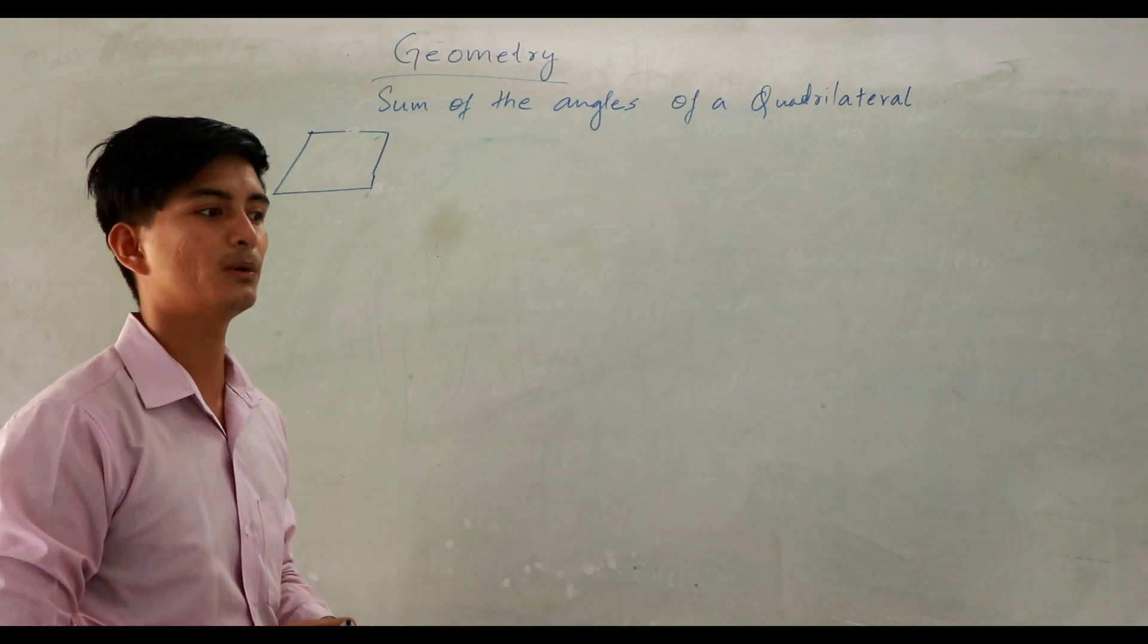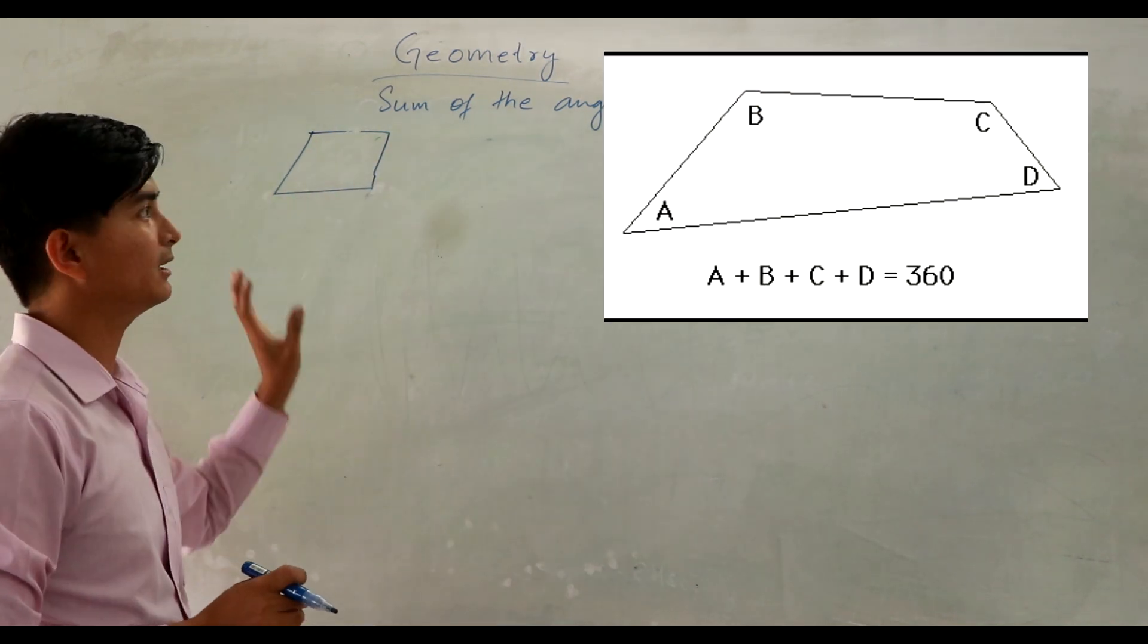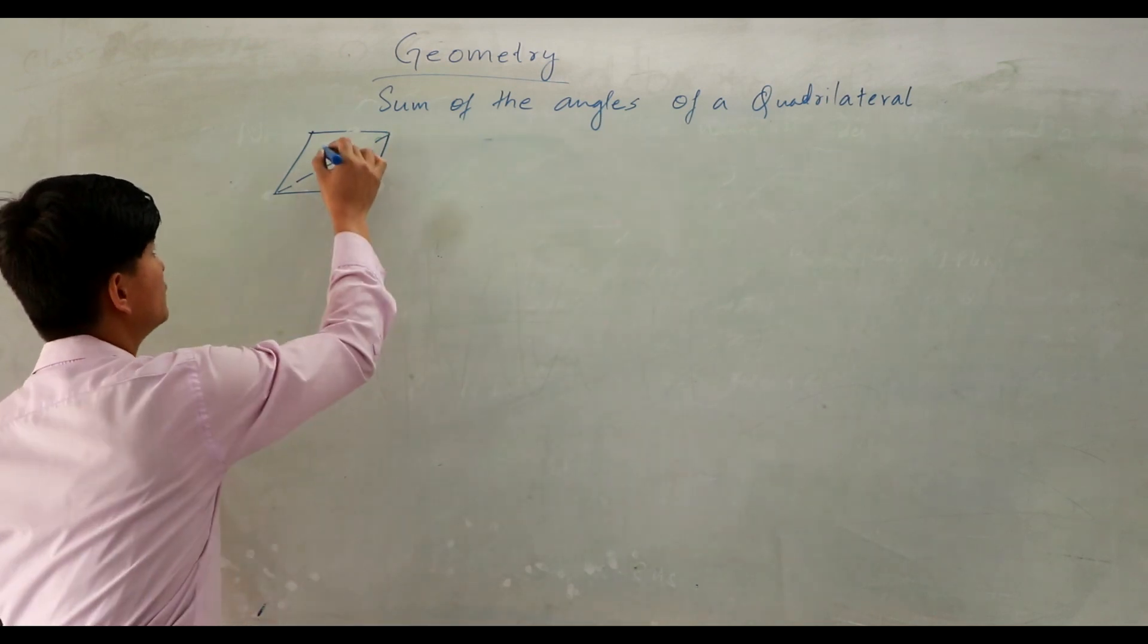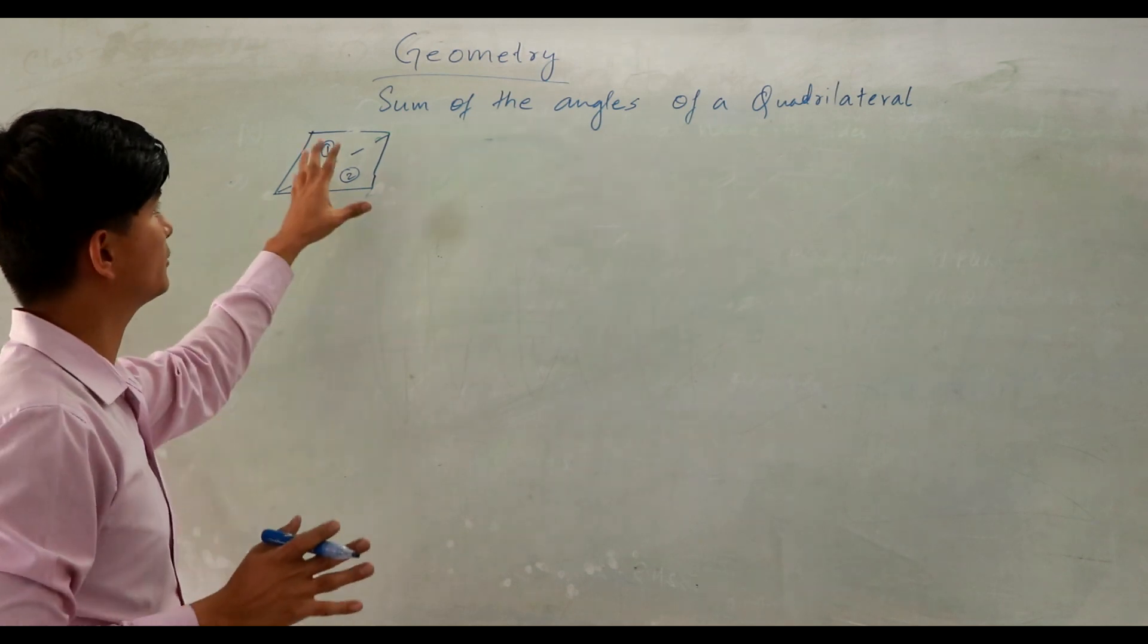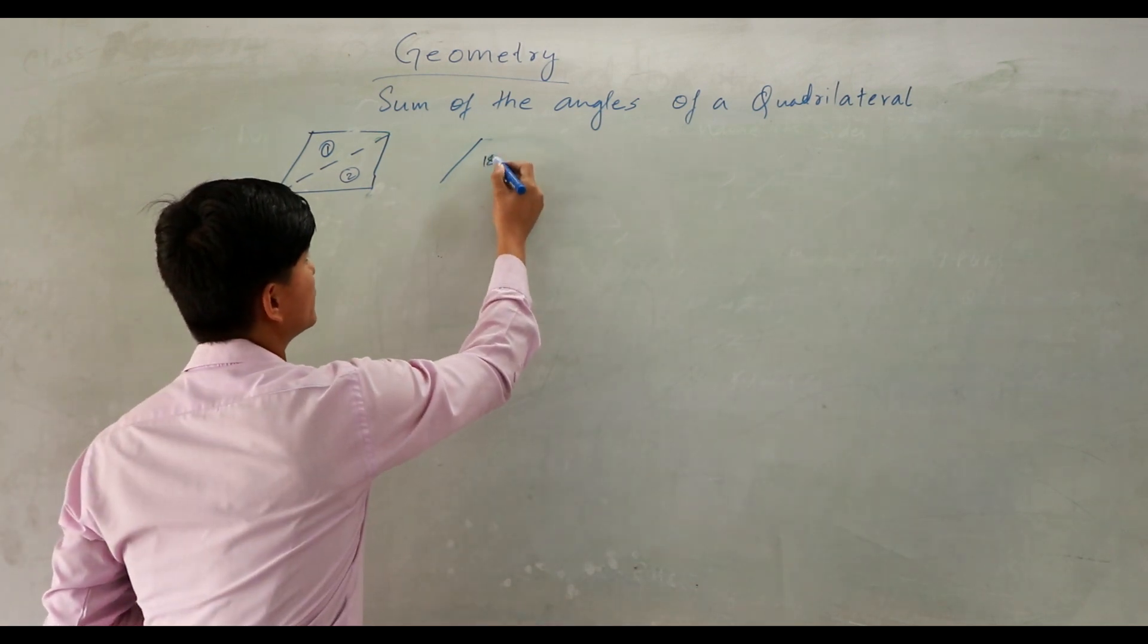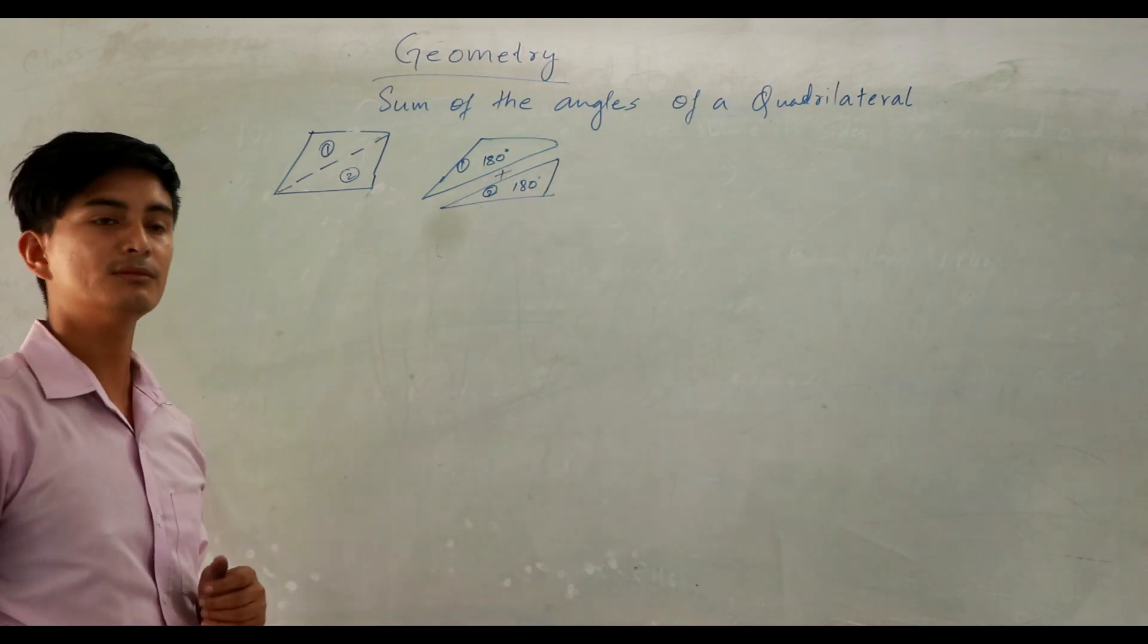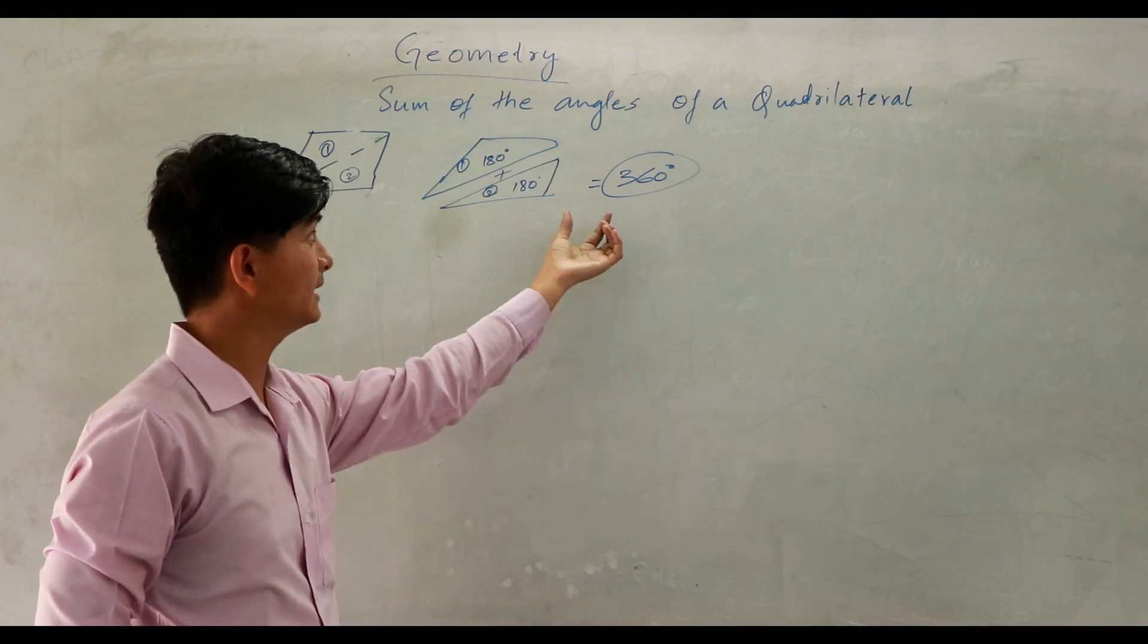Our next topic is the sum of the angles of a quadrilateral. This quadrilateral is divided by two triangles. We know the sum of angles in a triangle is 180 degrees. So if we have two triangles, we multiply: 180 times 2 equals 360 degrees. So the sum of the angles of a quadrilateral is 360 degrees, right?